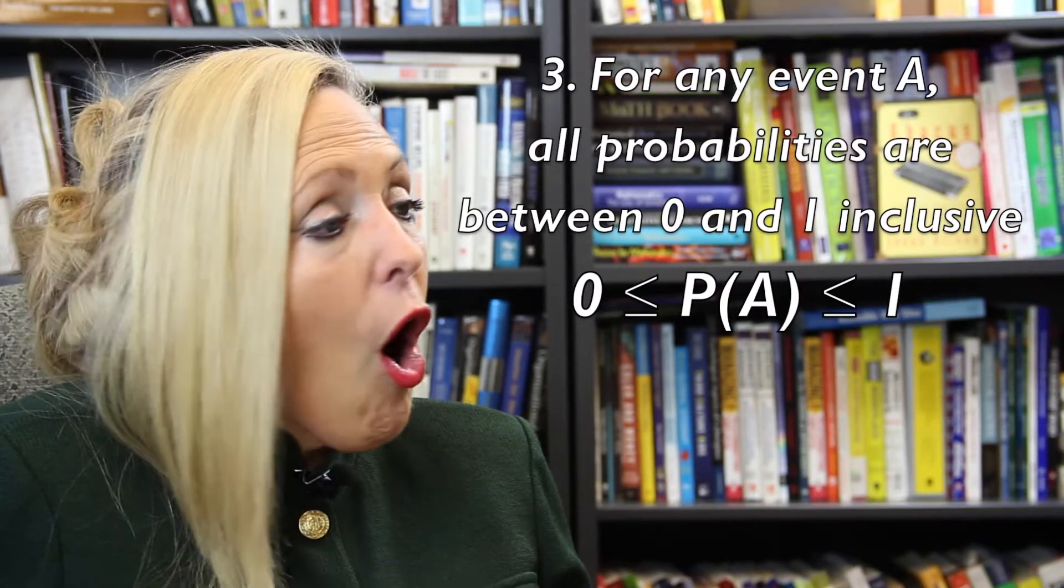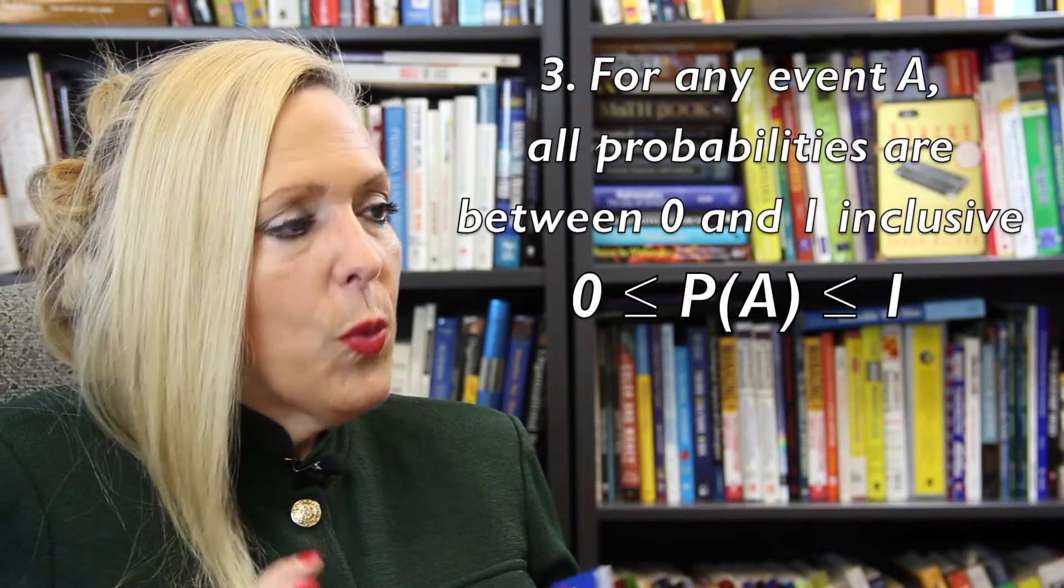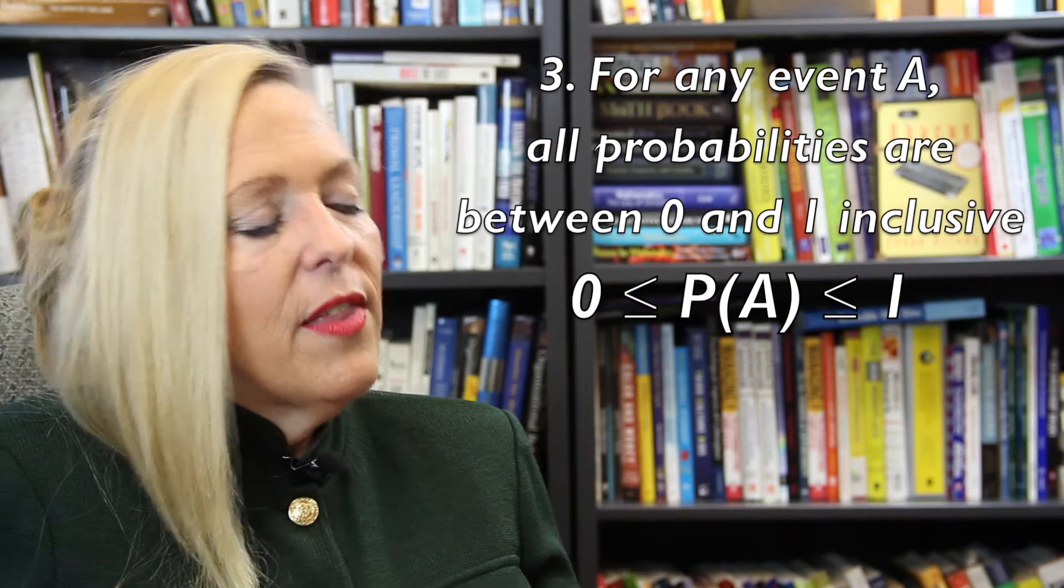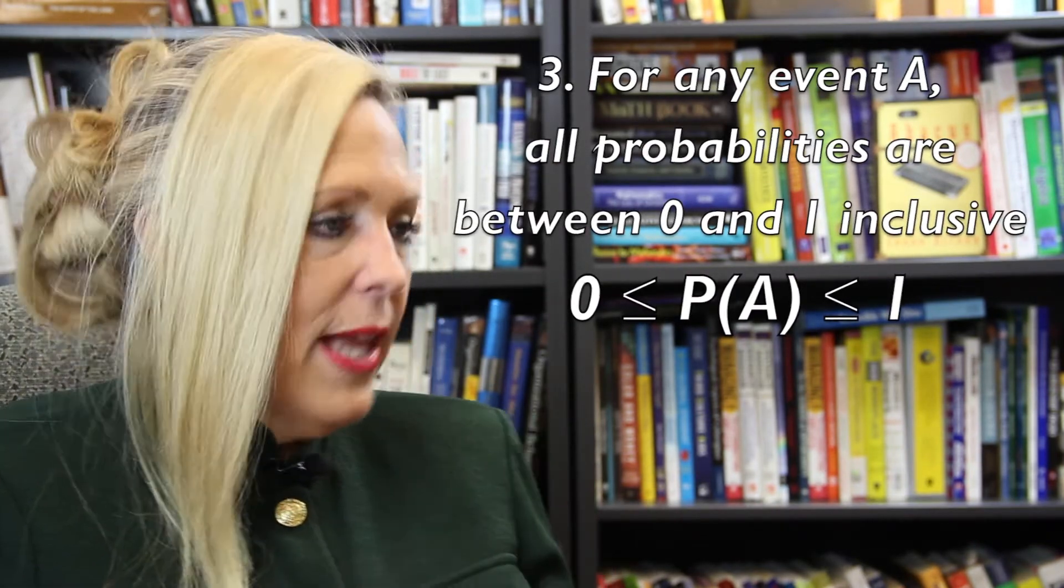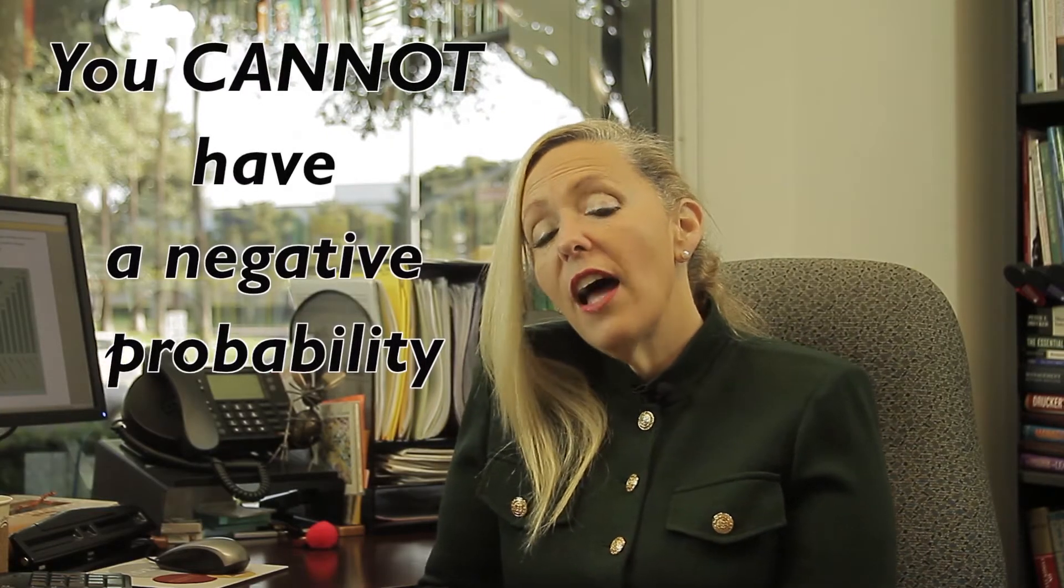Now, for any event A, all of the probabilities are between 0 and 1 inclusive. This means that no probability is greater than 1 or less than 0. In other words, you cannot have a negative probability.